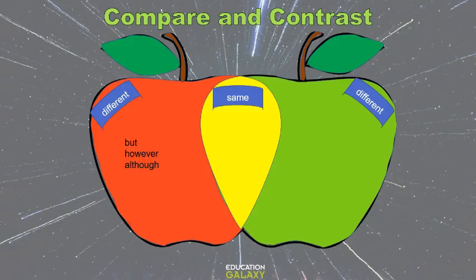Sometimes the authors show how two passages are different by using words like but, however, although, more than, less than, on the other hand. And to show similarities, they use words like similar to, alike, same as, and both.